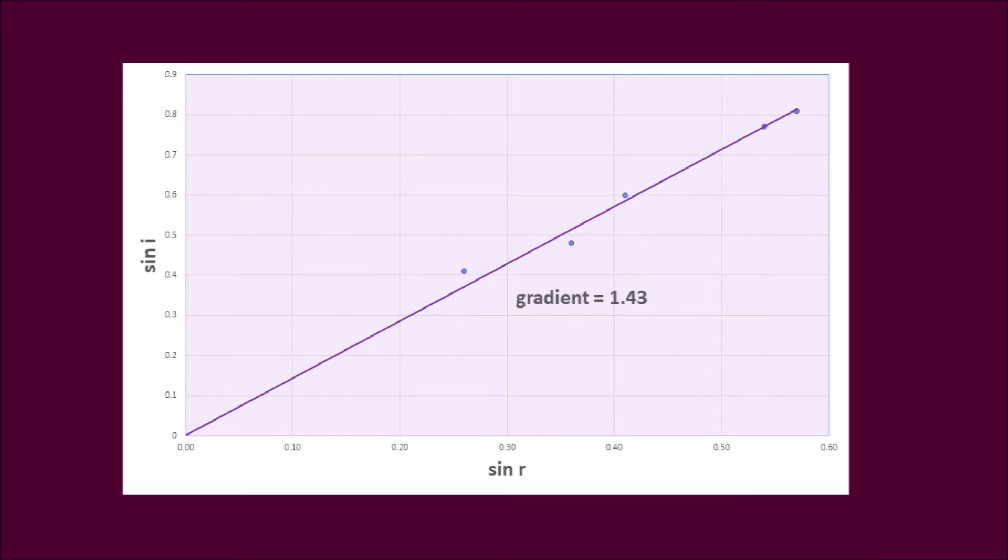So, if we graph our data points, if we plot the angle of incidence on the y-axis and the angle of refraction on the x-axis, what we should find is that we get a linear proportionality. They should be directly proportional to each other, and we should get a straight line of best fit going through the origin.